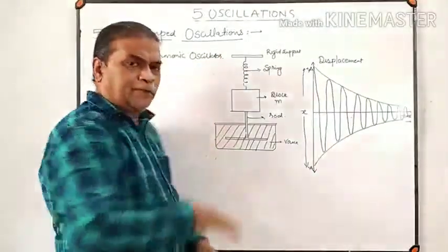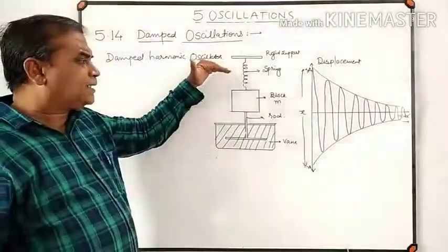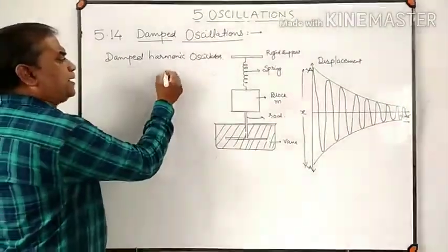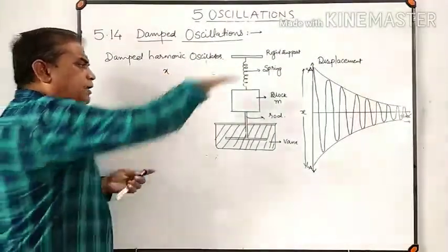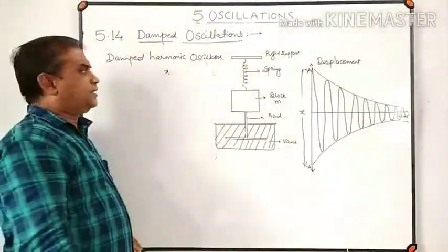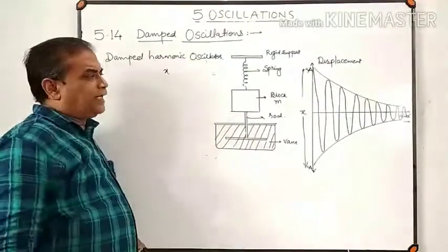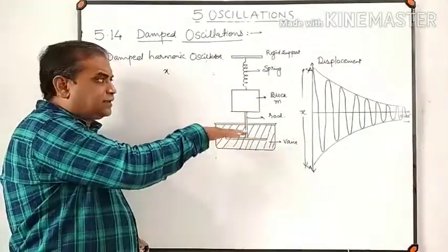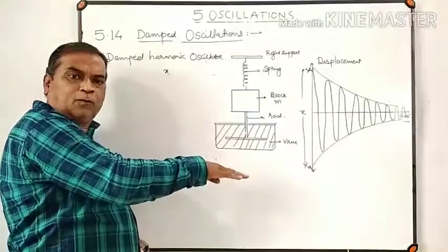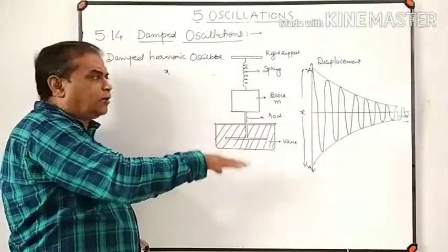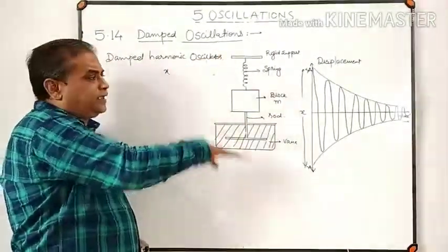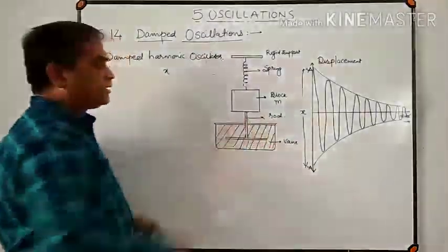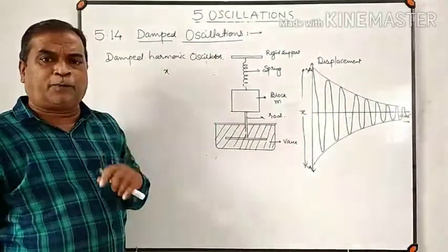When the block is pulled in a downward direction through a small displacement X and then released, the block moves vertically up and down — it performs up and down motion in the vertical direction. Because the vane is attached to the block with the help of a rod, it also moves up and down.